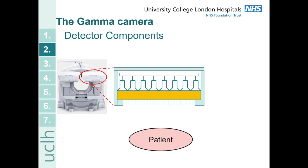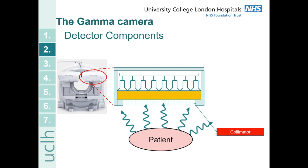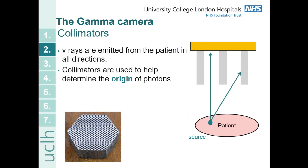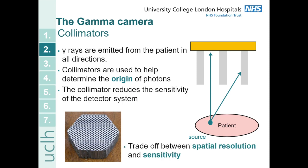In this picture you can see the components of a gamma camera. At the bottom you have your patient who is emitting gamma rays, and each of the gamma rays will first come into contact with the collimator, which is the first part of the gamma camera. They then go into the scintillation crystal, the photomultiplier tubes, and finally the processing electronics to create the image. Gamma rays are emitted in all directions, and the collimators are designed to determine the origin of these photons. A photon coming in straight will go through to the scintillator crystal, whereas a photon at an angle is attenuated by the lead collimator. The collimator reduces sensitivity, so choosing collimators is always a trade-off between spatial resolution and sensitivity.